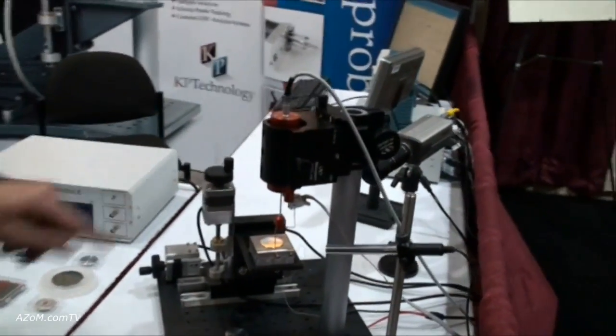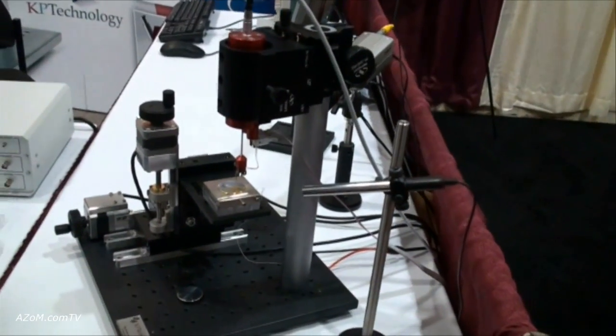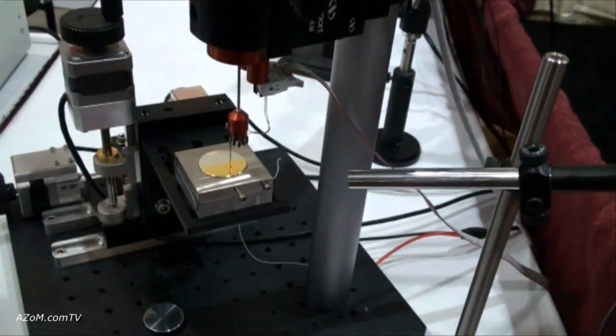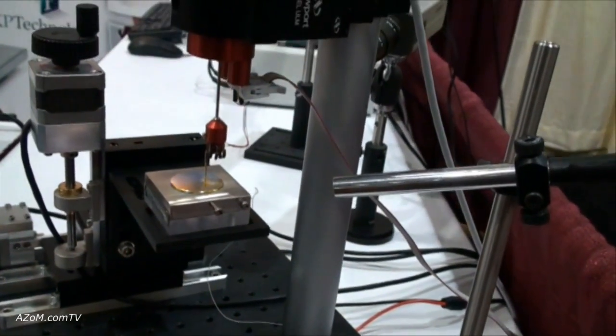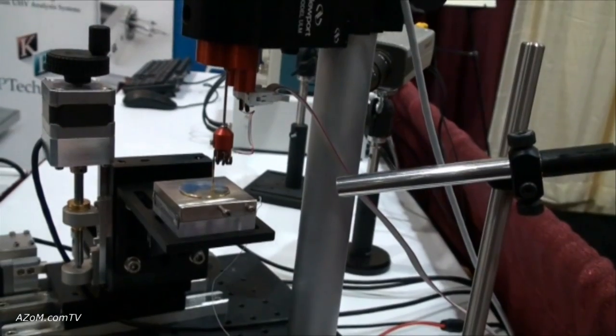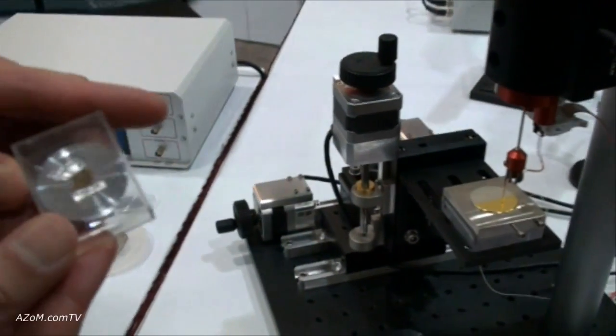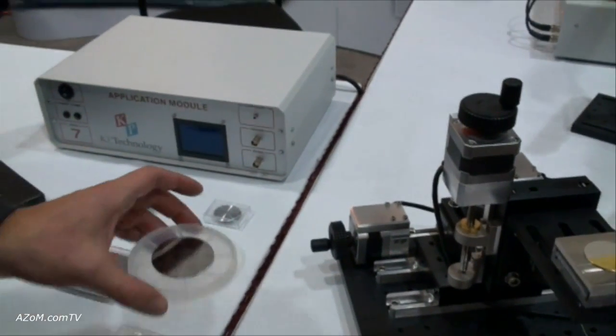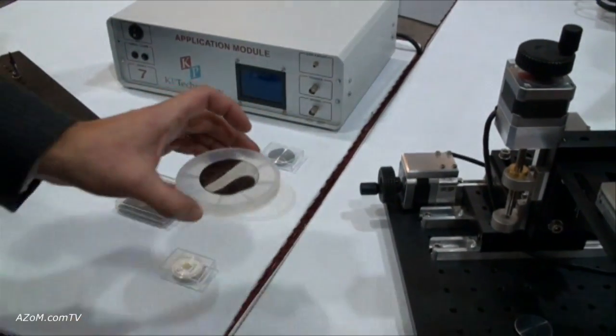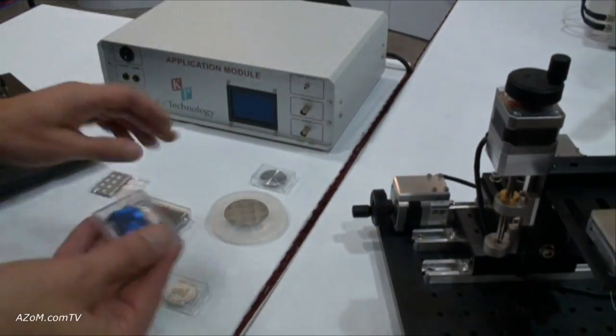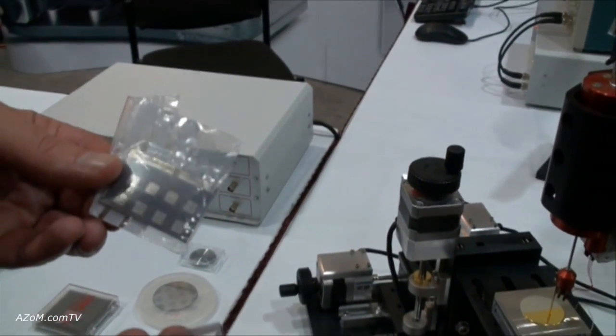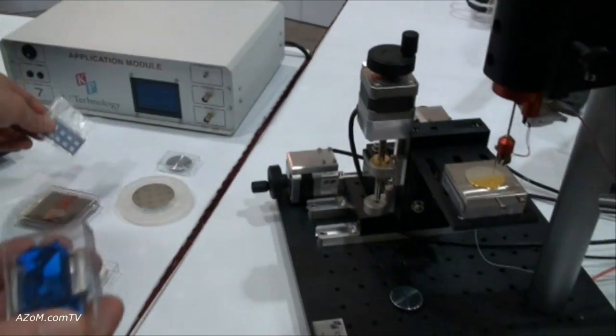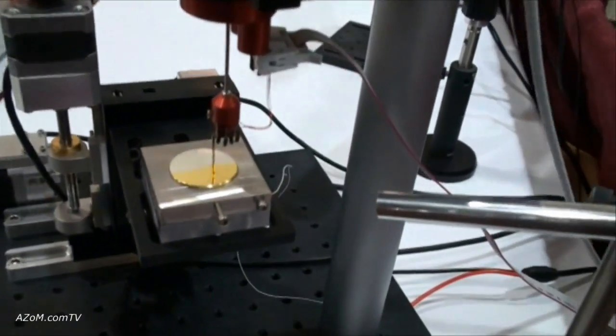The sample is aluminum and gold. The Kelvin probe measures the work function difference between a vibrating tip and the material under the tip. The material could be a metal, a device like this single electron transistor, a wafer with a pattern, or different types of solar cells. This technique is used for corrosion studies, polymer films, polymer electronics, and material studies.